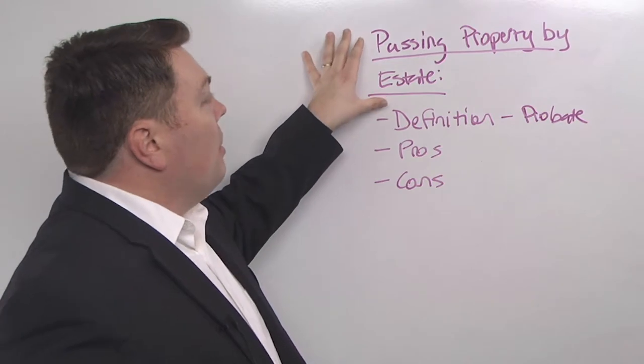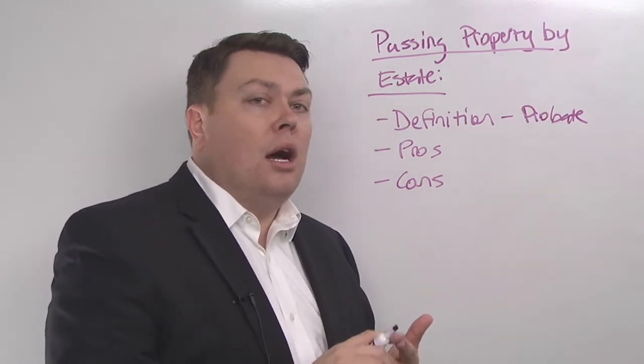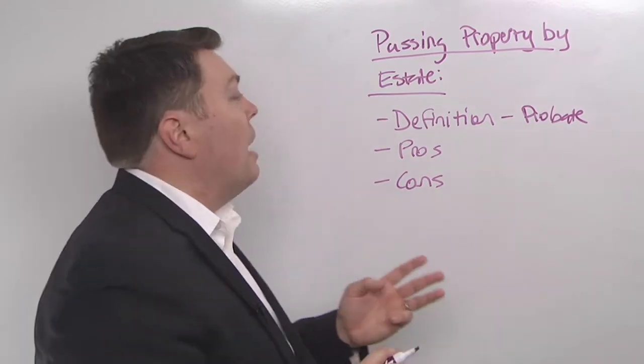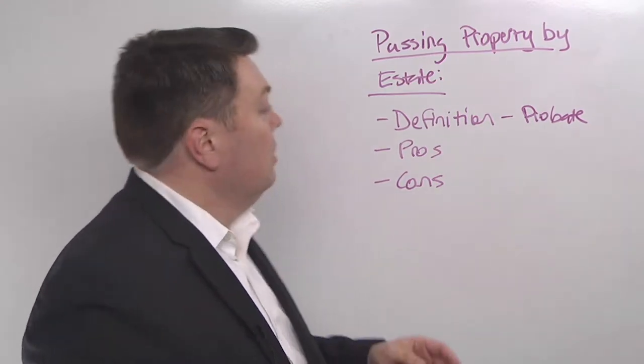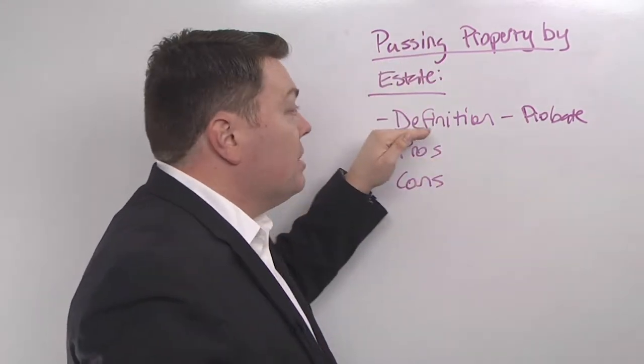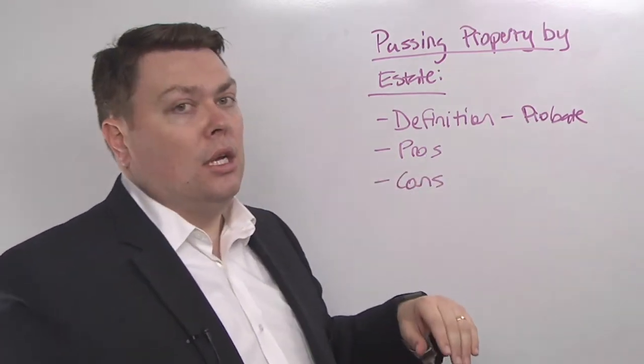When we're talking about passing property by your estate, it means you haven't passed it by contract, you haven't passed it through joint tenancy, and you haven't passed it through a trust. Even if you create a will, your property still has to go through probate. That will is essentially a letter to the probate judge.